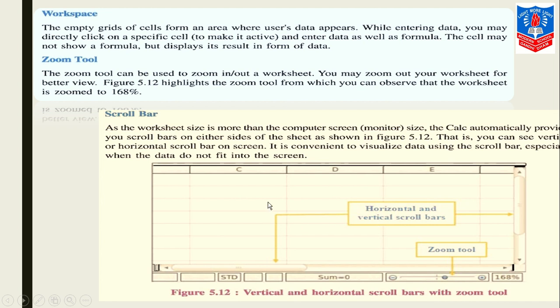Now we talk about horizontal scroll bars. As a worksheet size is more than the computer screen or monitor size, Calc automatically provides you scroll bars to either side of the sheet as shown in figure 5.12. In this image you can see vertically or horizontally two scroll bars on screen. It is convenient to visualize data using the scroll bar, especially when the data do not fit into the screen of your device.